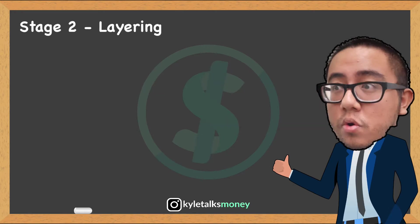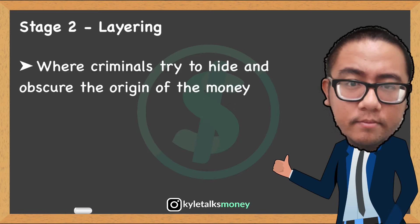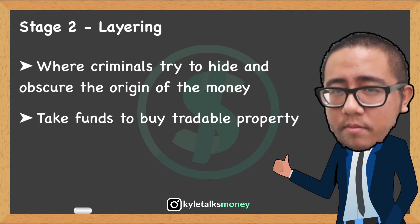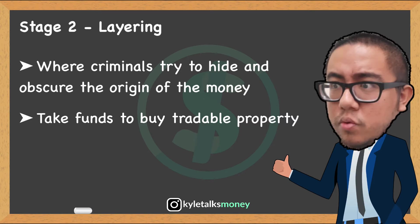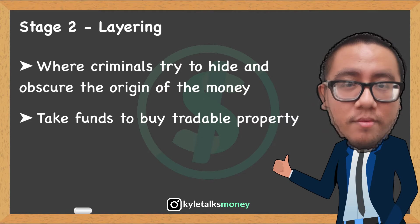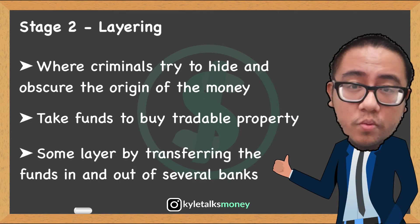Next, let's talk about layering. Layering is where criminals try to hide and obscure the origin of the money. They move their money around through multiple transactions — for example, taking funds from the bank to buy tradable properties such as expensive artwork, gold, bonds, fancy cars, or real estate. Another option is to invest in a legal business. Some criminals layer by transferring funds in and out of several different bank accounts across several countries.